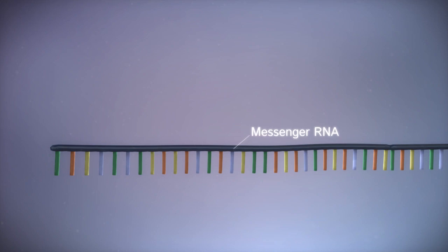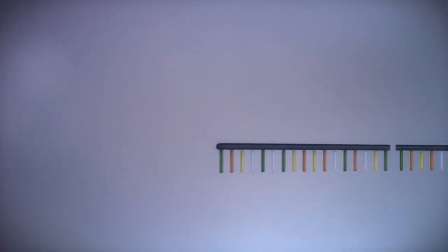Before the messenger RNA can be used as a template for the production of proteins, it needs to be processed. This involves removing and adding sections of RNA.